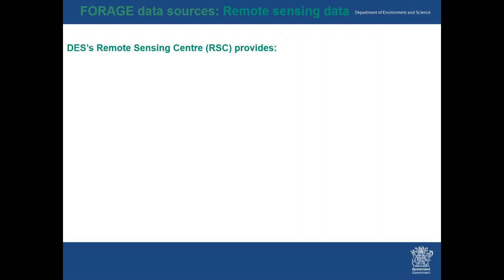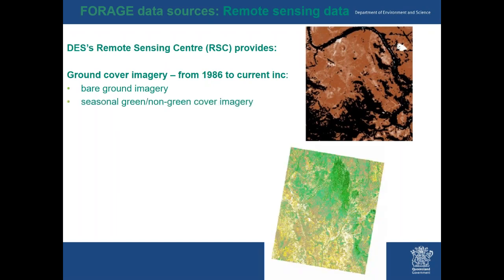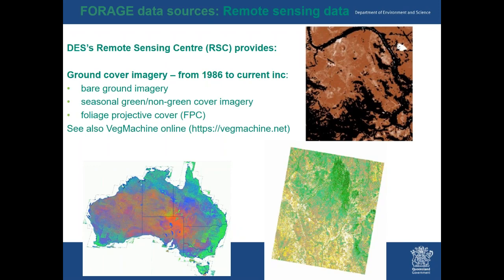Next is remote sensing data going into FORAGE. Our remote sensing centre at EcoSciences provides ground cover imagery from 1986 to current, including bare ground imagery, seasonal green and non-green cover imagery, and foliage projective cover (FPC) — tree and woodiness cover. You can also see Veg Machine online to get a handle on seasonal fractional cover in a dynamic sense.